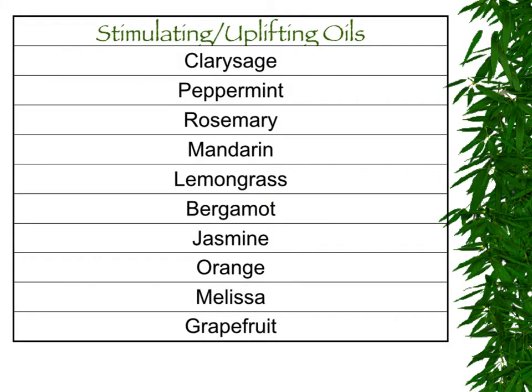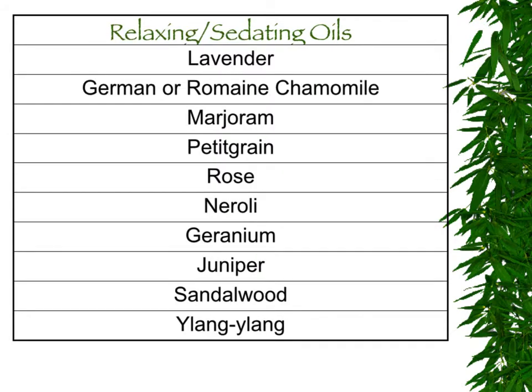There are many oils that are stimulating and uplifting, and other oils that are relaxing and sedating. Examples of stimulating oils are clary sage, peppermint, rosemary, mandarin, lemongrass, bergamot, jasmine, orange, melissa, and grapefruit. The relaxing or sedating oils include lavender, chamomile, marjoram, petitgrain, rose, neroli, geranium, juniper, sandalwood, and ylang ylang.